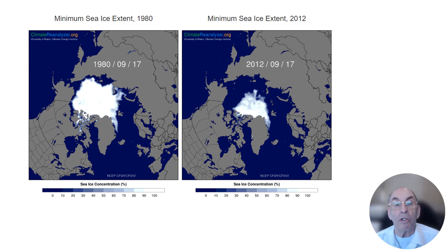In addition to providing charts of important climate data, the Climate Reanalyzer produces images that help you visualize what the climate data is telling us. This image of Arctic sea ice coverage on the same day of the year — when the ice coverage was at a minimum in both 1980 and 2012 — shows in dramatic fashion what climate change is doing to our planet.